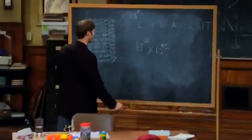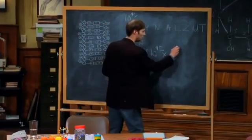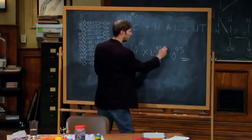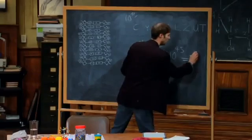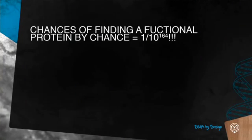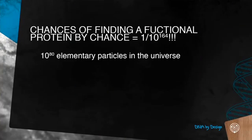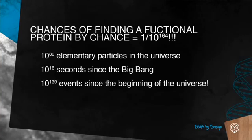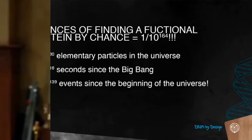So the odds of building even a short functional protein by chance alone: 74 plus 45 plus 45 — you can add the exponents when multiplying exponential numbers — that's 10 to the 164th power. Can anyone get their mind around a number that big? There's only 10 to the 80th elementary particles in the entire universe, only 10 to the 16th seconds since the Big Bang, and only 10 to the 139th total events since the beginning of the universe. Now you're starting to get the understanding of why people are very skeptical that the chance hypothesis is going to do the job.